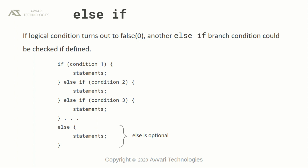Else-if statements. We can branch multiple if statements in if-else conditions. If condition 1 turns out to be false, the else-if condition will be checked. If the condition of else-if condition 2 turns out to be false, the next else-if condition is checked — that is condition 3 — so on and so forth. Finally, we can write an else statement, or we may not — that is optional.